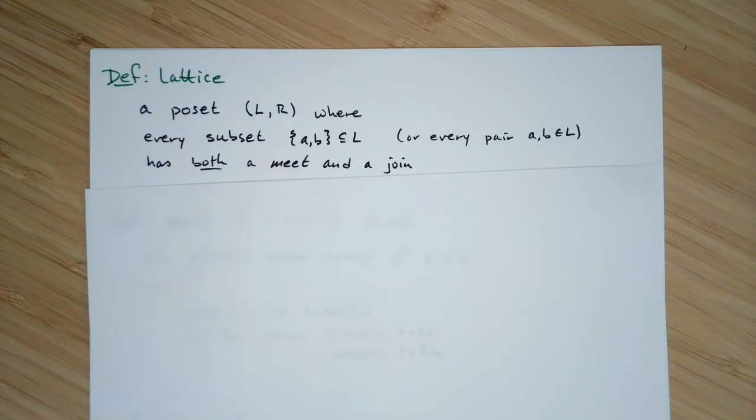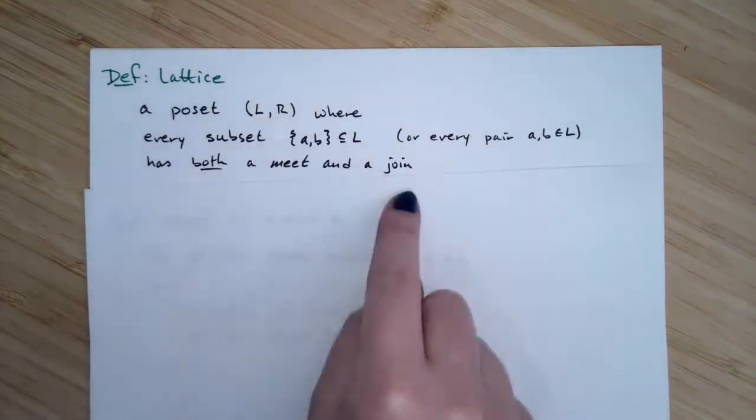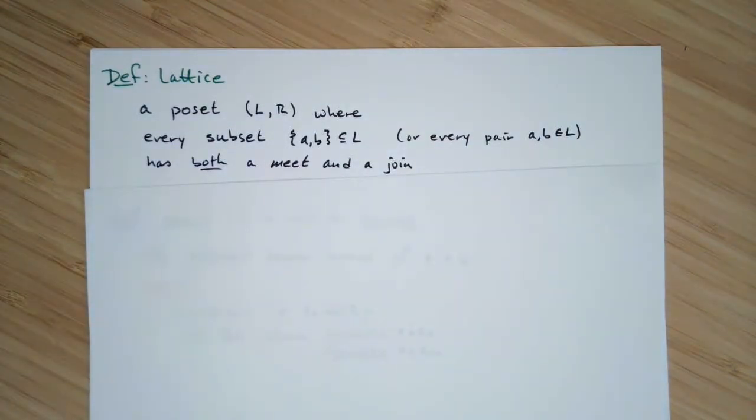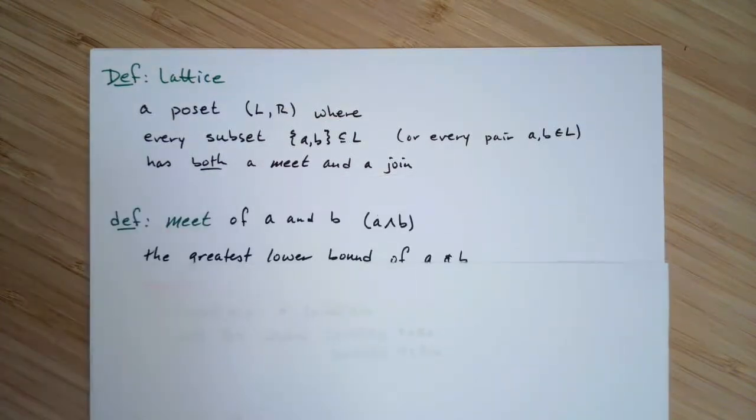you will always be able to compute its meet and its join if you are in a lattice. So that's the defining feature of you have a lattice or not is the meet and the join exist. So what happens if you have two elements, you compute either the meet or the join, and it doesn't exist in the poset, that's when you would not have the lattice. So let's go ahead and define a meet and a join.